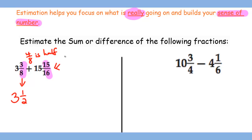And 15/16 is really close to 1 whole, which is 16/16. So 15 plus 1 whole equals 16. You're basically adding 3½ with 16, which gives you 19½, and it should be easy enough to do mentally.